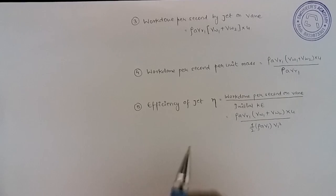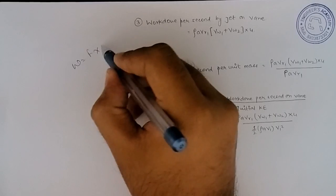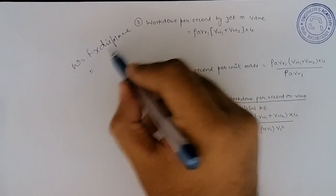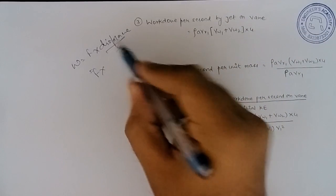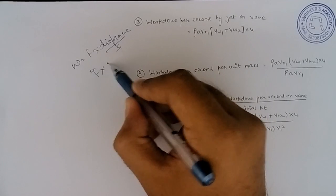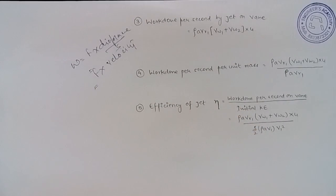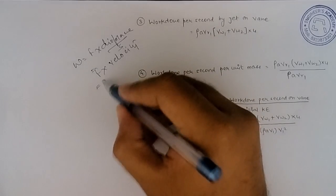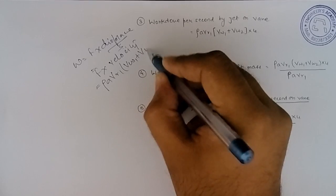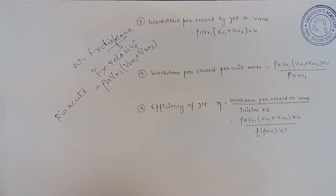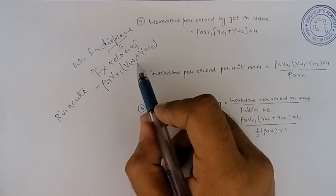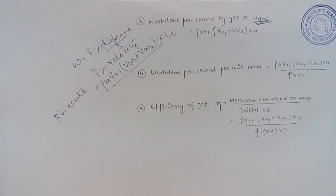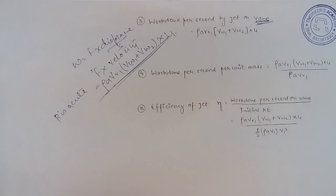The next formula is work done per second by jet on vane. Work done equals force into displacement, and since we are talking per second, displacement per second is velocity. Force is ρ × A × vr1 × (vw1 + vw2) — this is the case when beta is acute. The velocity here is the velocity of the vane, which is u. So work done per second equals ρ × A × vr1 × (vw1 + vw2) × u.